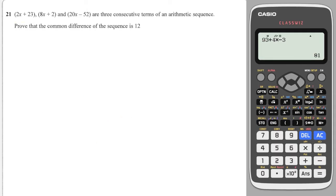Okay, tricky question. We've got three algebraic terms, and they're consecutive terms of an arithmetic sequence. Prove the common difference of this sequence is 12. Okay, well, if they do form an arithmetic sequence, then the gap between them should be the same, and it should be equal to d.